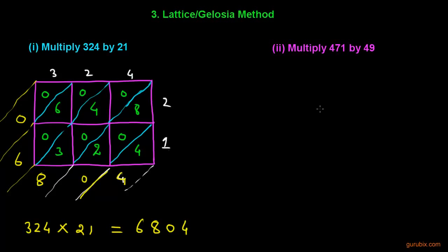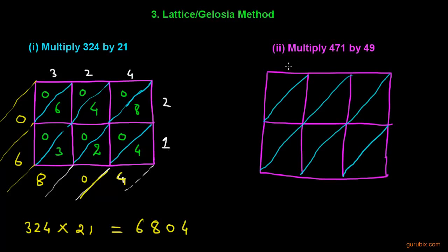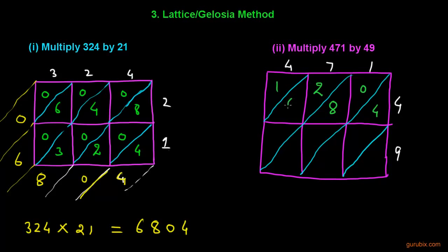Let us take another example: multiply 471 by 49. We write 471 along the top and 49 on the side and start multiplying. 1 times 4 is 4; 7 times 4 is 28 — write 28 in the box; 4 times 4 is 16 — write 16 in the box.